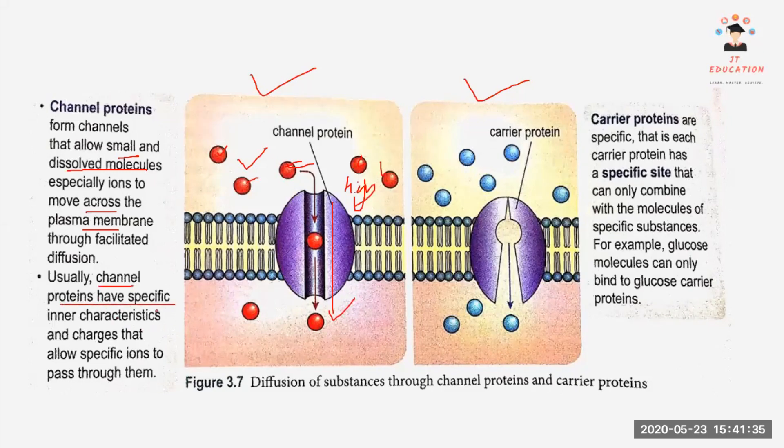Usually channel protein has specific inner characteristics and charge that allows specific ions to pass through them. It means that not everything can pass through channel protein. Only specific molecules with specific charge or ions can pass through channel protein.